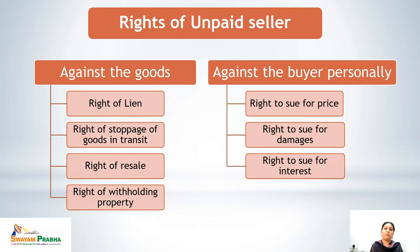If the person is an unpaid seller, he must have some rights to claim that money from the buyer. The rights of an unpaid seller can be divided into two categories. Against the goods: right of lien, right of stoppage of goods in transit, right of resale, and right of withholding the property. Against the buyers personally: right to sue for price, right to sue for damages, and right to sue for interest.